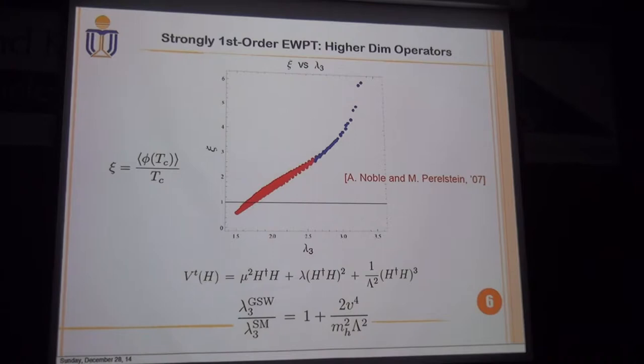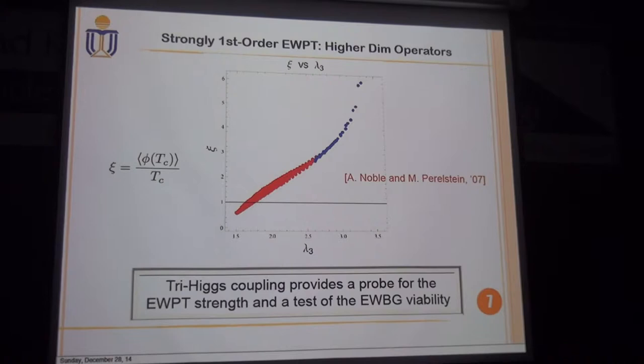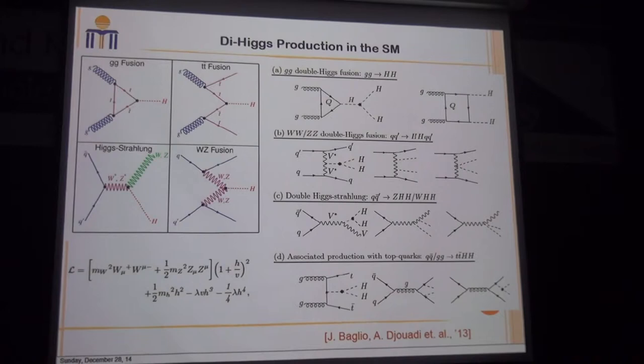According to the illustration of these examples, we see that the tri-Higgs coupling provides a probe for the strength of the electroweak phase transition in the early universe and a test of the viability of electroweak baryogenesis. The value of the tri-Higgs coupling can be extracted by measuring di-Higgs production.